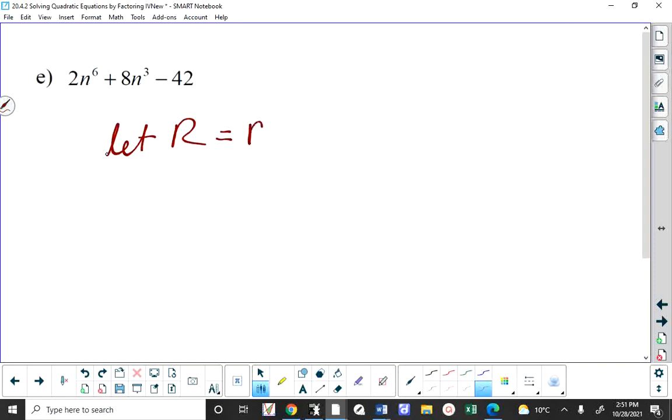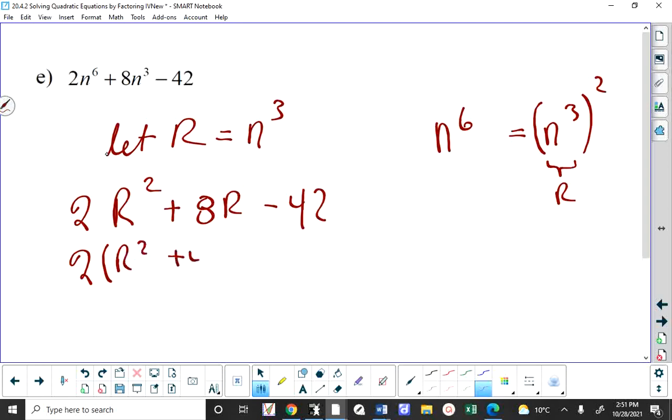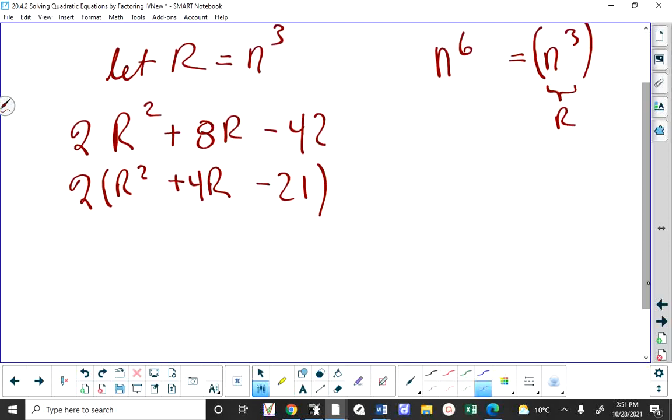You would have to say, I'm going to let r equal n cubed, or whatever letter you want. This would become 2 times r squared, because n to the 6 is n cubed squared. And this is r. Plus 4r minus 21. You would take the 2 out. You would factor this. And I hope even those of you that want to use the r, you're starting to say, oh, yeah, I see what's going to happen here. The r is simply going to become n cubed. So this factors into r plus 7, nope, r minus 3, r plus 7. And then you put the n cubed back in. And you get what we got before.